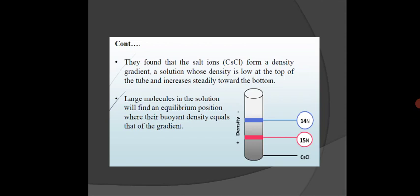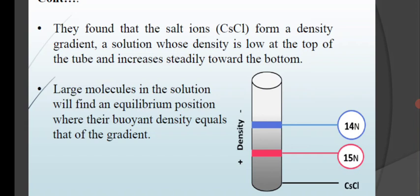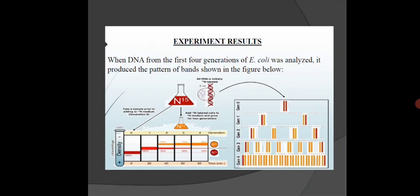When we centrifuge for density gradient using cesium chloride density gradient method, we know that N14 is in the supernatant phase at the uppermost layer because it's light, and N15 is the heavy isotope present where density is higher. Large molecules in the solution will find an equilibrium position where their buoyant density equals that of the gradient.